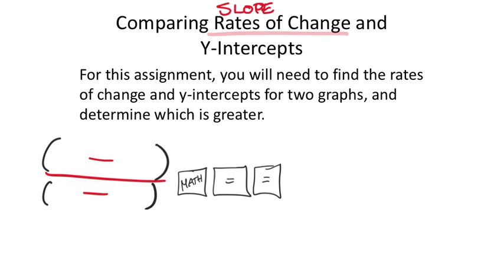We're going to use the slope formula. If the line is straight, you can use the stair-step method—but it's really up to you. Some students like to stick with the slope formula because it's familiar. On straight linear graphs, you can use the stair-step method.